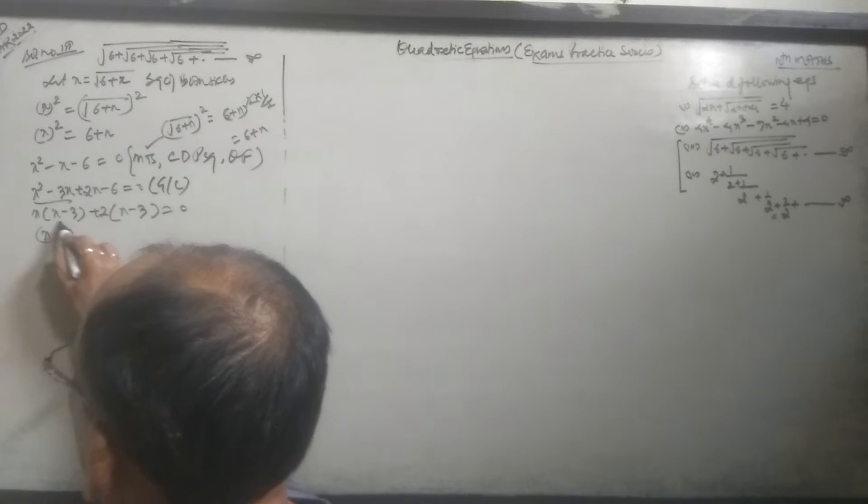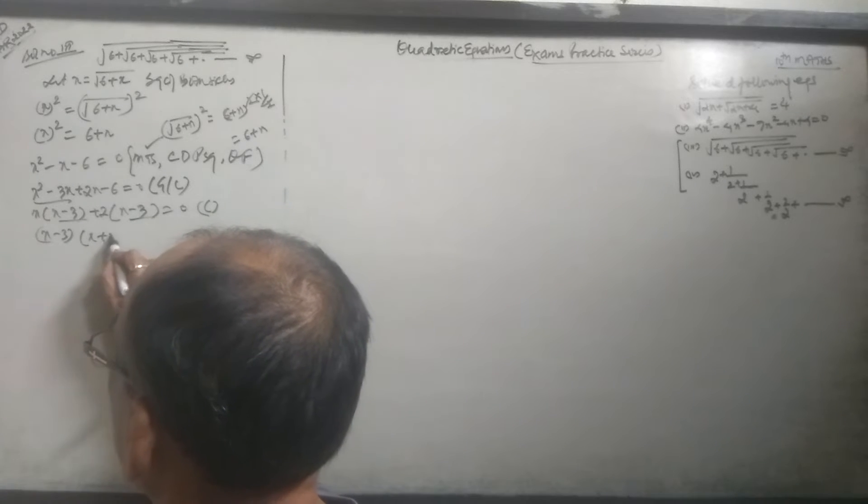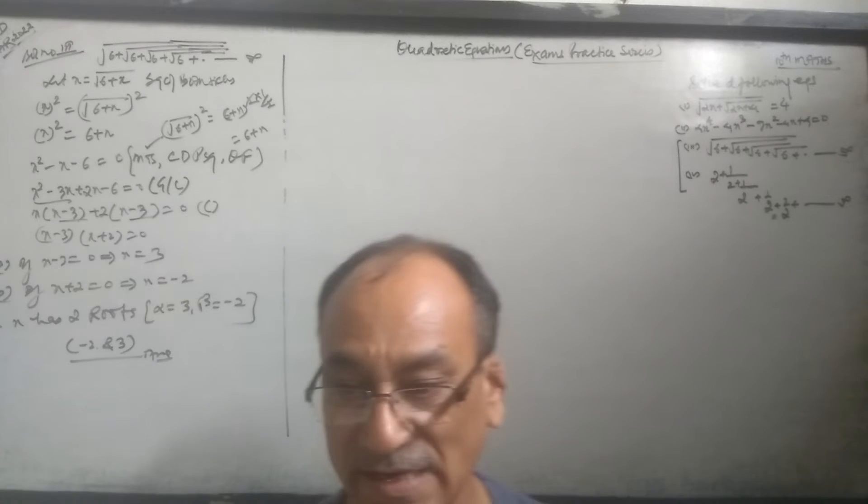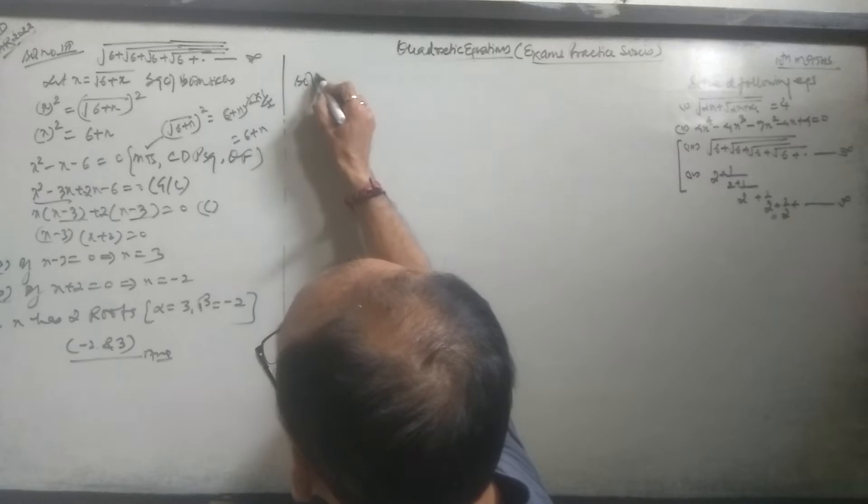X - 3 = 0, then X = 3. Or if X + 2 = 0, X = -2. X has two roots, alpha and beta: 3 or -2. These are the two roots, 3 and -2. Clear? This is the first solution.